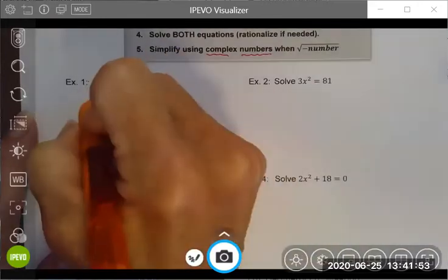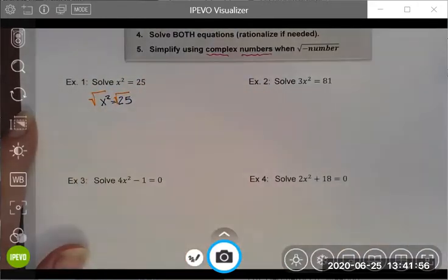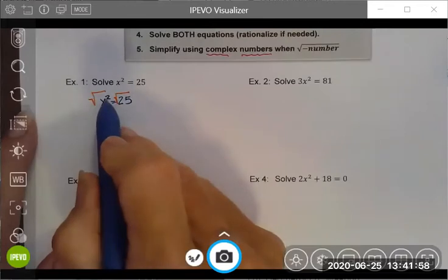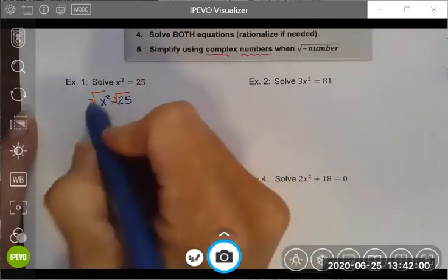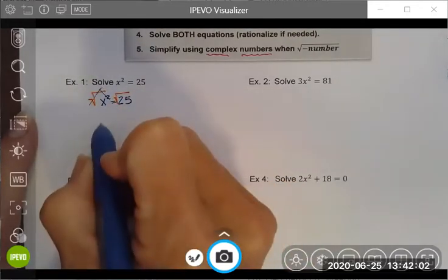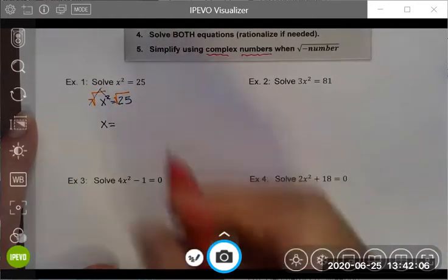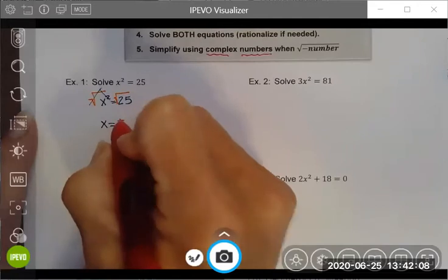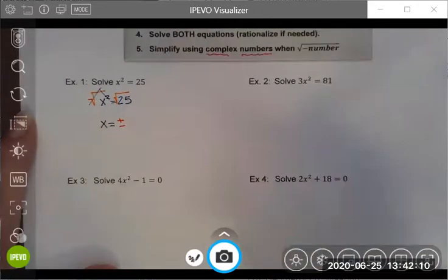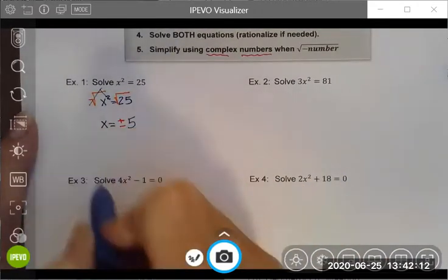I'm going to take the square root of both sides. The square root and squaring are inverse operations, so those cancel each other out. I end up with x equals, don't be tempted to say five, because it's really plus or minus five. Those are my two solutions.